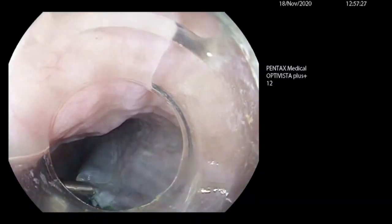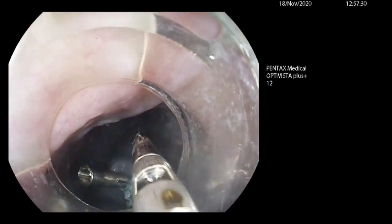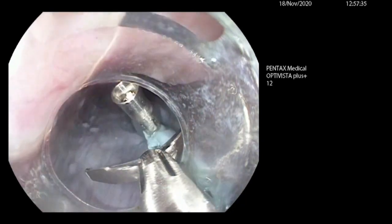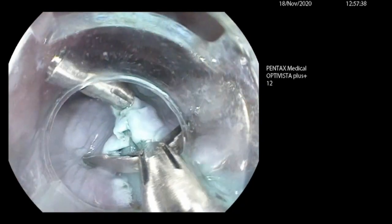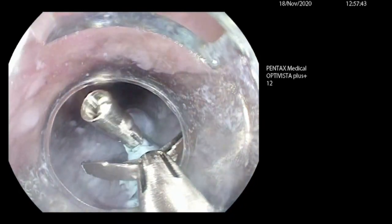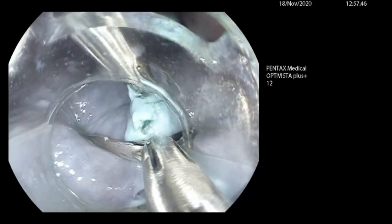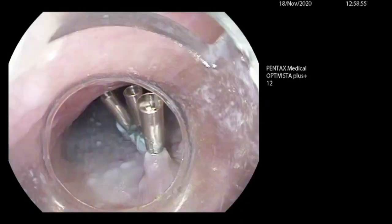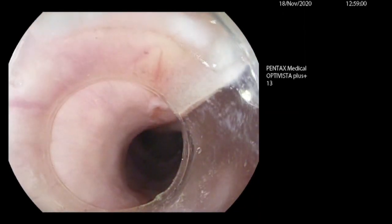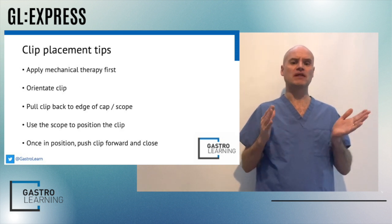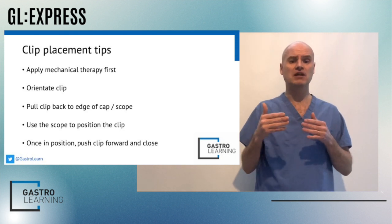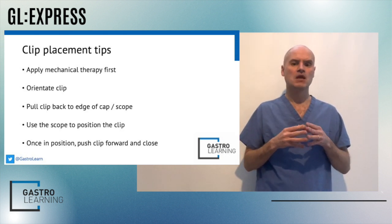We then use the scope itself to direct the clip — we don't use the wheels on the scope, and we don't try to push the clip out and apply it from a distance. We bring the clip to the edge of the scope, then move the scope to where we want to apply the clip. We push the scope forward onto the vessel, and once the clip is in the right place, push it out whilst closing to apply more pressure. This ensures we get the optimal position of the clip.